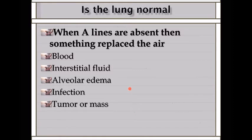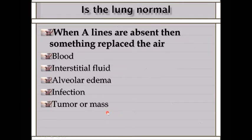When A lines are absent, we don't see air at the pleura—something has replaced that air. It can be blood, interstitial fluid, alveolar edema, infection, or a tumor or mass.